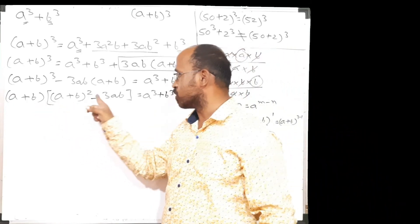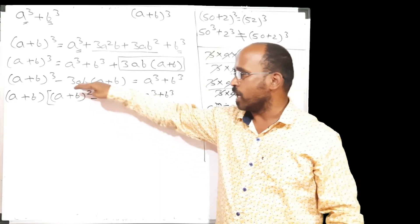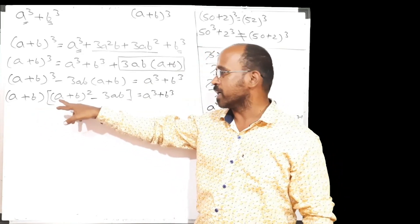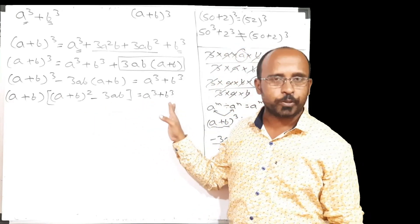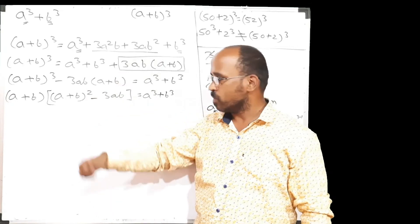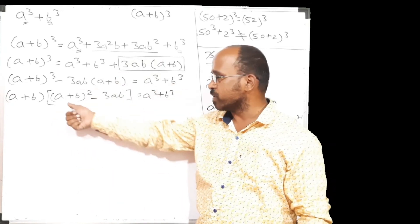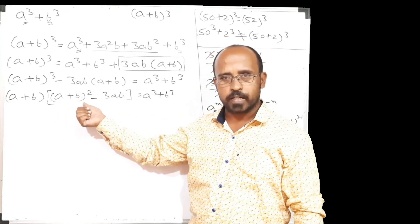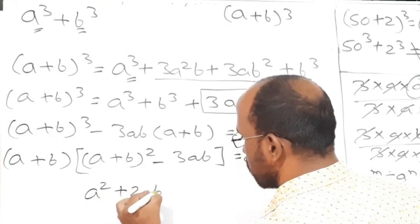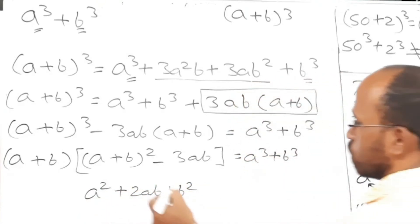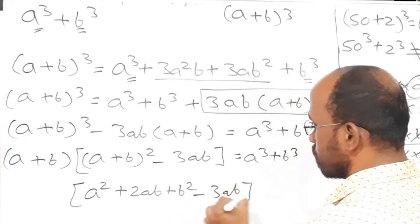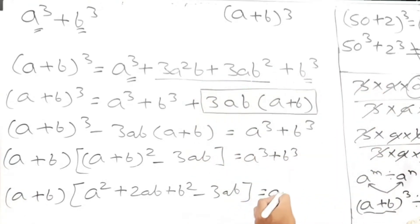Now look at this step: a plus b into the second bracket — a plus b bracket square minus 3ab — which is nothing but a cube plus b cube. In the first bracket, both of the terms are unlike. In the second bracket, there is a bracket within bracket, meaning we can apply BODMAS. According to BODMAS, we can expand this a plus b bracket square. The formula is nothing but a square plus 2ab plus b square. That we have expanded. And the remaining thing, minus 3ab, we haven't changed. This a plus b bracket, we haven't changed. Which is equals to a cube plus b cube.